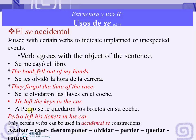But if I say a Pedro, then I'm more specific. Remember, we did that with verbs like gustar — same concept. Now, only certain verbs can be used in accidental se constructions: acabar, caer, descomponer, olvidar, perder, quedar, and romper.